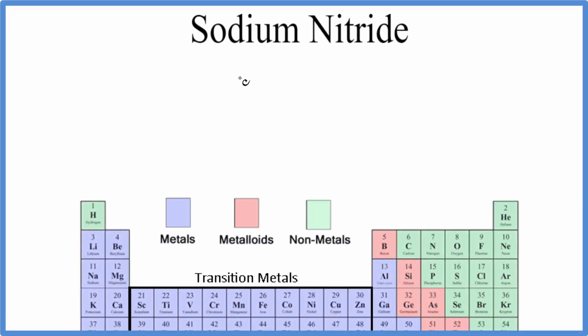For sodium nitride, to write the formula first, we write sodium as it's seen on the periodic table, that's Na, and then nitride, that's the nitrogen, and that's just N.